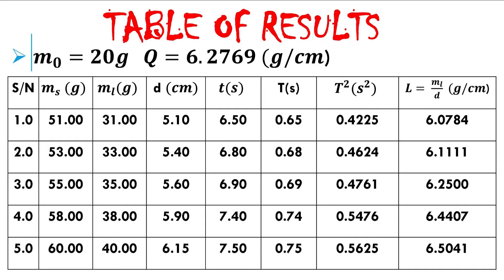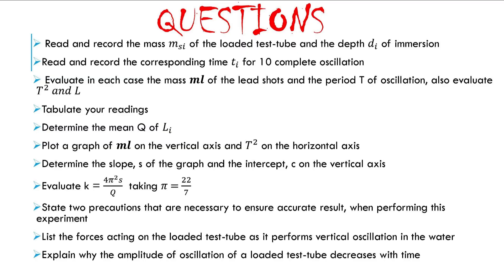Here is what the table represents. The initial mass of the test tube — 20 grams — is recorded at the top of the table as given in the question. The first column captures the mass of the test tube and lead shots combined. The second column gives the mass of the lead shots alone after calculation. The depth of immersion is recorded in centimeters, followed by the time for 10 oscillations, the period T, T squared, and finally the evaluation L equal to mass of lead shot divided by depth.